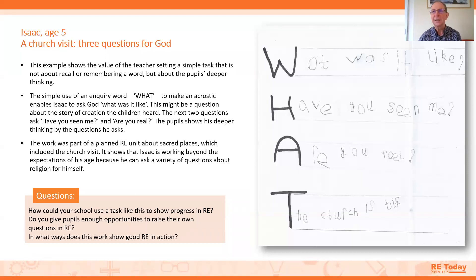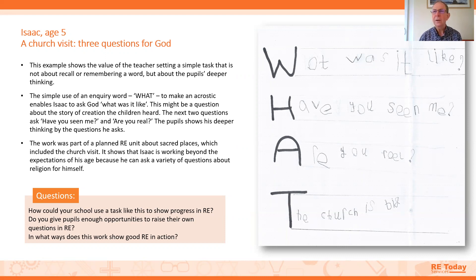Here's the first example. This is five-year-old Isaac. He's been to a church visit and was asked: some people say this is where you meet God — if you could ask some questions about being here, let's use an inquiry word for an acrostic, W-H-A-T. Isaac's questions are addressed to God: 'What was it like? Have you seen me? Are you real?' The last one is a statement — his observation of the church. He made those questions up himself at only five years old, showing a variety of questions about religion.